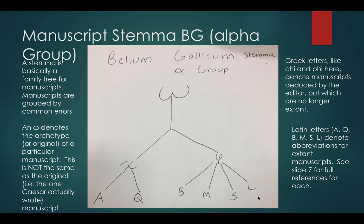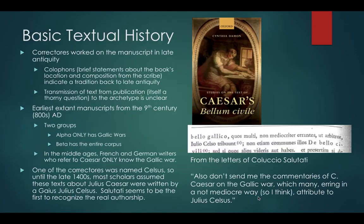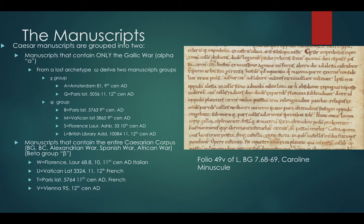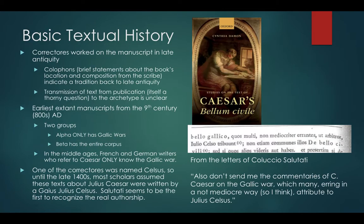Those are manuscripts that we actually have, and those references are listed here. They're usually based on where they are — that's the city name — then the shelf number. So, for example: Paris, Latin, manuscript number 5056.